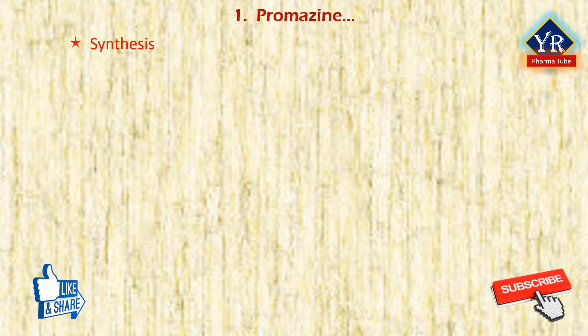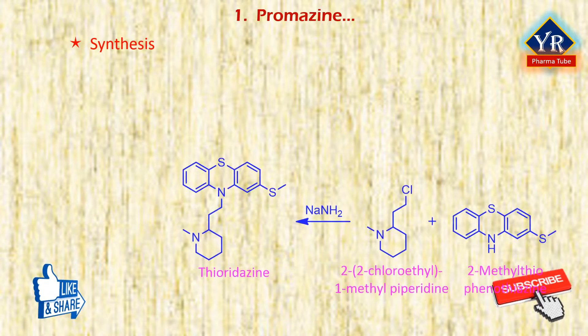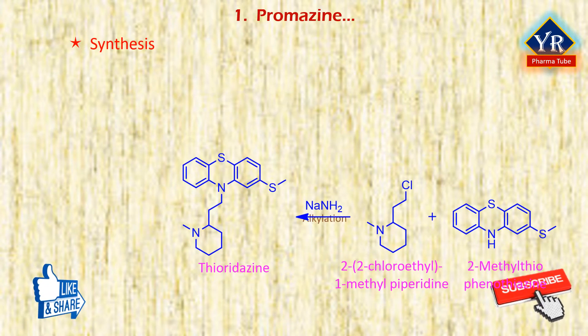Thioridazine is prepared by an alkylation reaction between 2-methylthiophenothiazine and 2-(2-chloroethyl)-1-methylpiperidine in the presence of sodium amide.